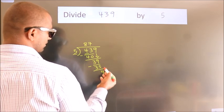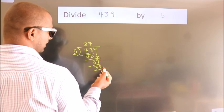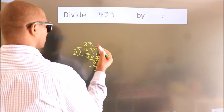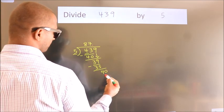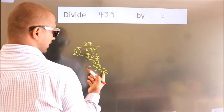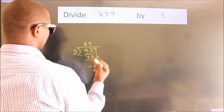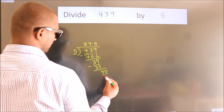After this, no more numbers to bring it down. So what we do is, we put dot take 0. So 40. When do we get 40? In 5 table. 5 8s 40.